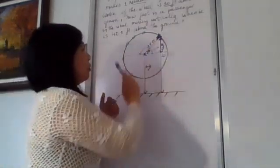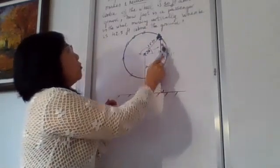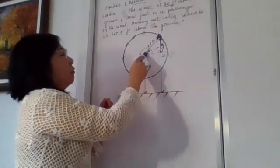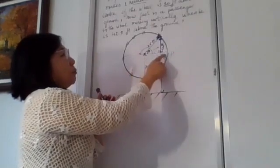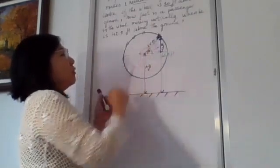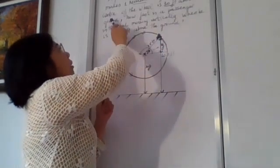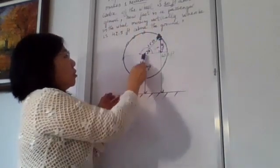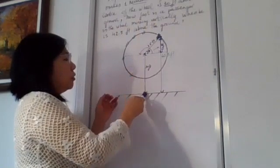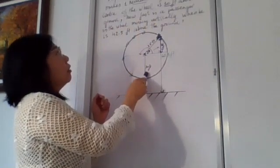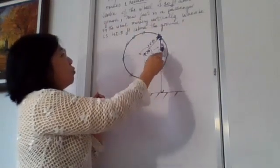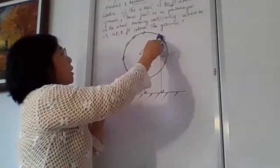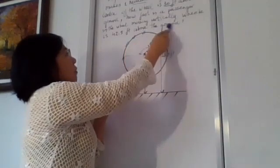So we have a Ferris wheel. The diameter of the Ferris wheel is 50 feet, so we know the radius is half of the diameter, which is 25 feet. The center of the wheel is 30 feet above the ground. I have a passenger moving vertically when he is 42.5 feet above the ground.